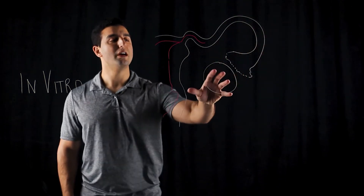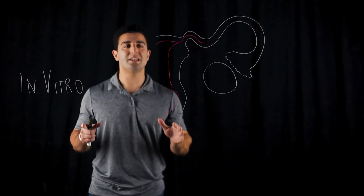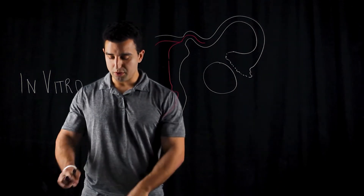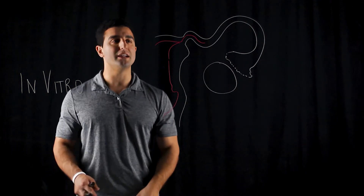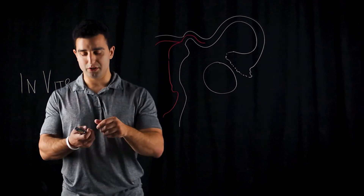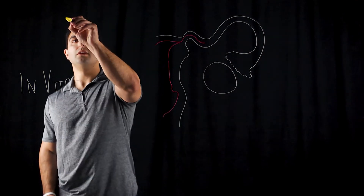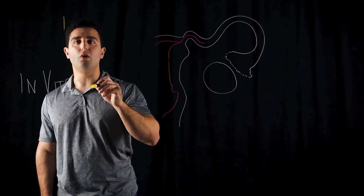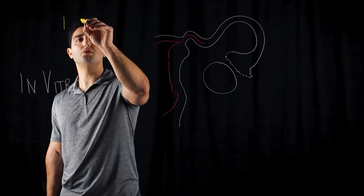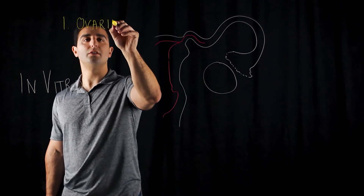Looking at this structure here: this is the uterus attached to the fallopian tube, and eventually you have this big circle here — that's called the ovaries. There are several steps that take place in order for fertilization to occur. The first step in the proper in vitro fertilization technique is some kind of hormonal stimulation to promote ovulation.